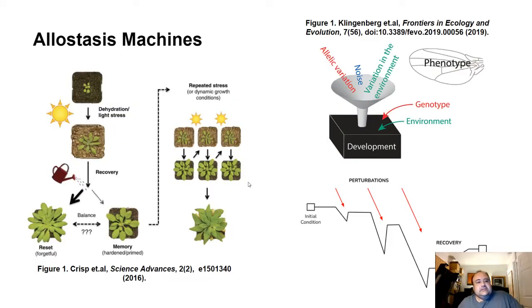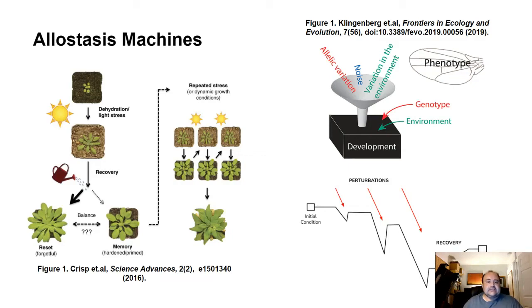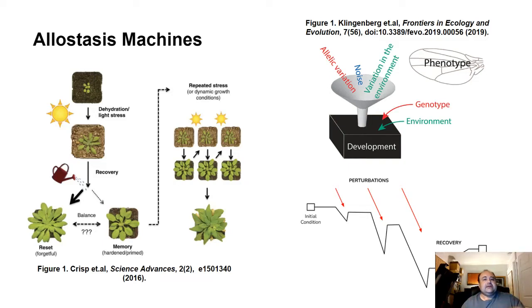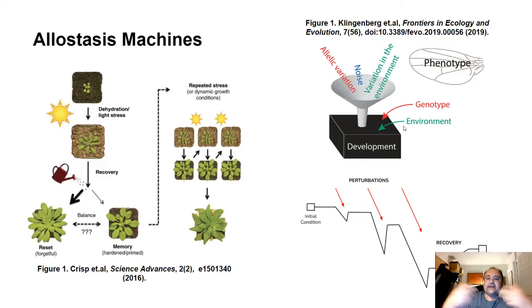Allostasis machines may be responsible for behaviors in other systems besides human cognition. Allostasis operates in plants during growth with respect to stress perturbations, where an internal model of plant growth and epigenetic memory result in differential growth under different stresses. You also see this in phenotypic development — for example, in the drosophila wing, where variation in the environment and noise feed into a developmental black box and produce changes in the shape of the phenotype. All of these can be characterized using the allostasis machine approach.